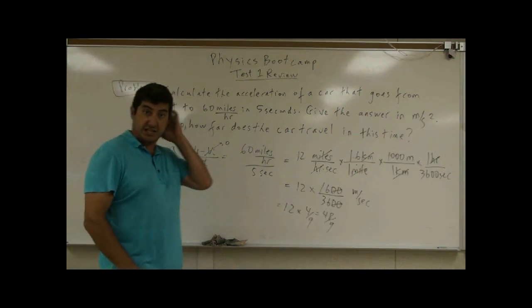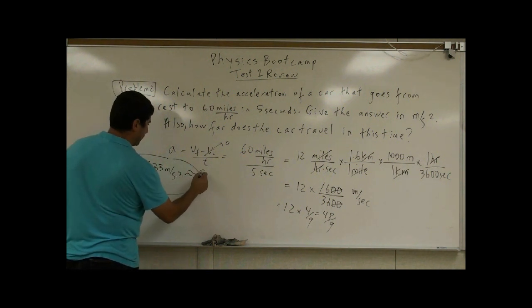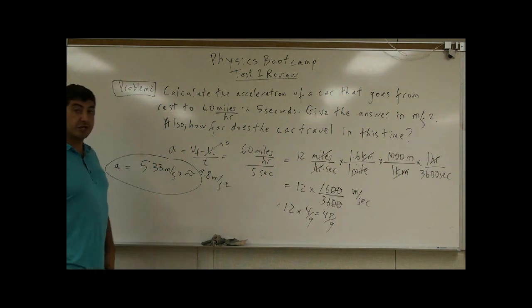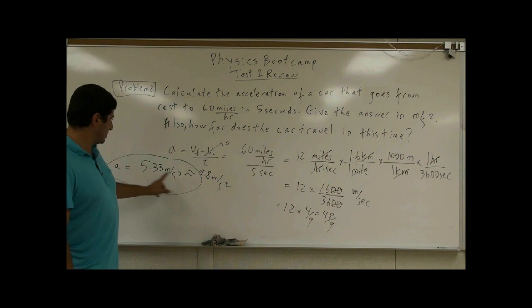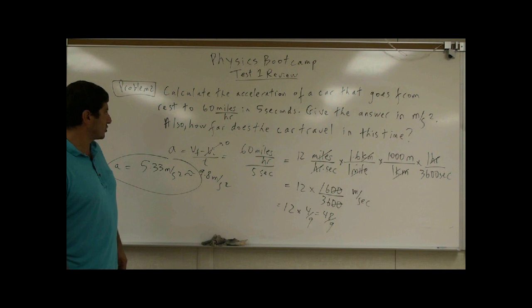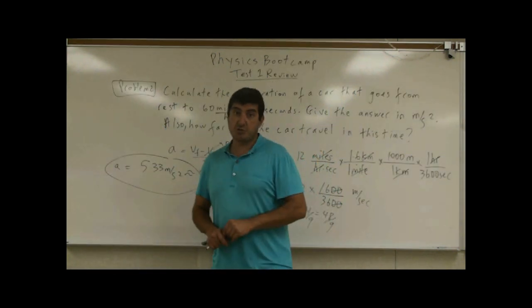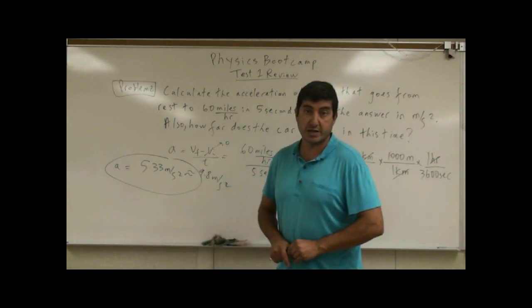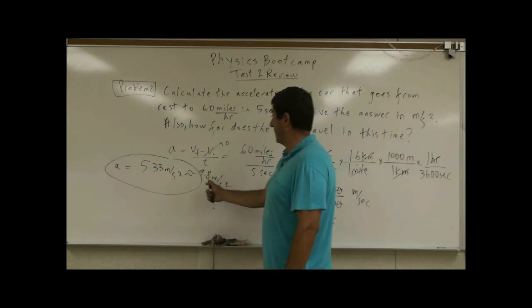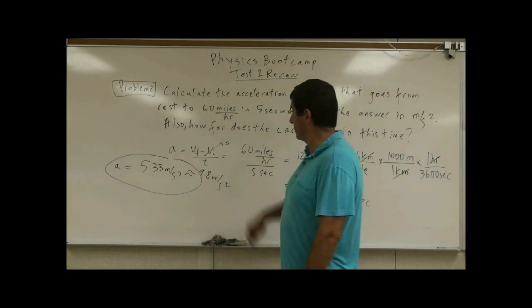So what's the distance? By the way, this is about half of the acceleration of gravity, a little bit more. Acceleration of gravity is 9.8 meters per second squared. So this is about 50 percent or a little bit more, 60 percent of the acceleration of gravity. So a car that can go from zero to 60 in five seconds is accelerating very, very fast.